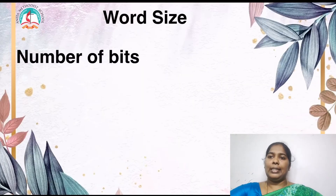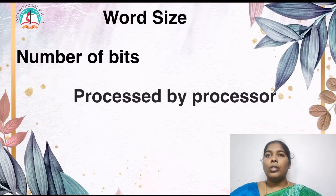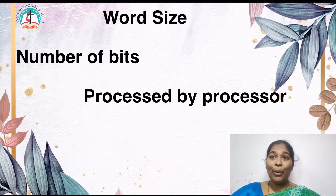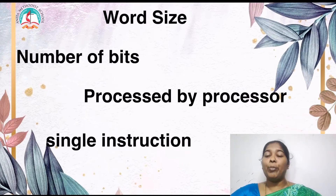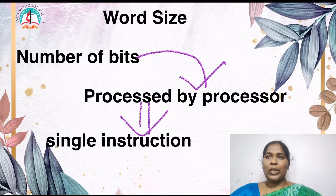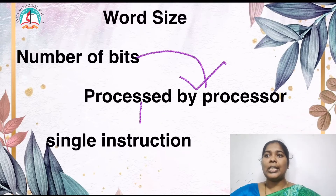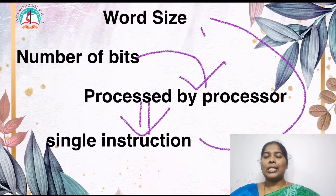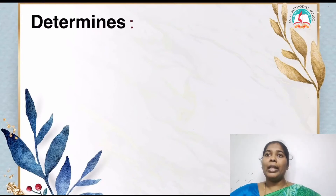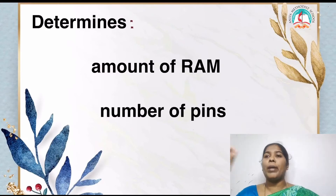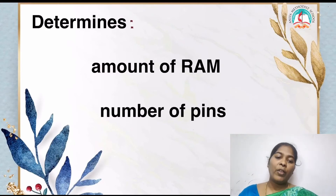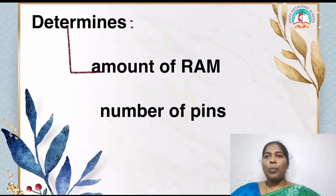The next characteristic is word size. Word size is the number of bits that can be processed by a processor in a single instruction. It determines the amount of RAM that can be accessed by a microprocessor at a time, and also the total number of input and output pins, which determines the architecture of the microprocessor.